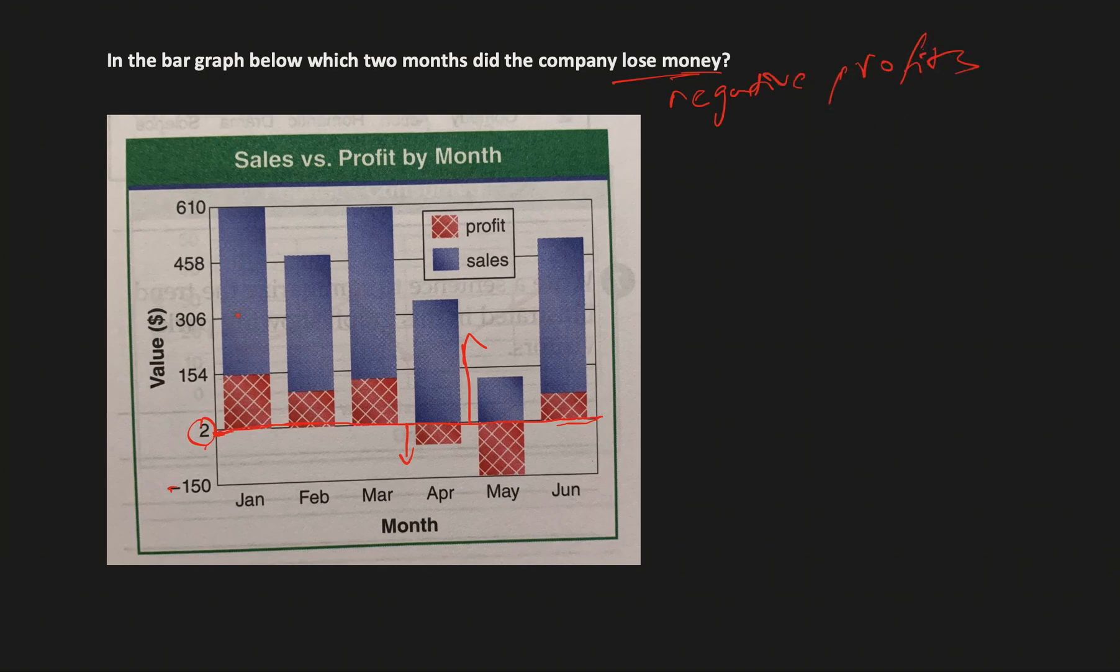When it comes to lose money, that means it's asking for negative profit. If we look at this graph again, this is all months and on the y-axis we have values in dollars. Below this is negative amount, so this is negative 150 dollars. We have to find out which two months where the profits were negative, which two months where the profits were below this line. We can see that this is first and this is second, so the answer for this would be April and May.